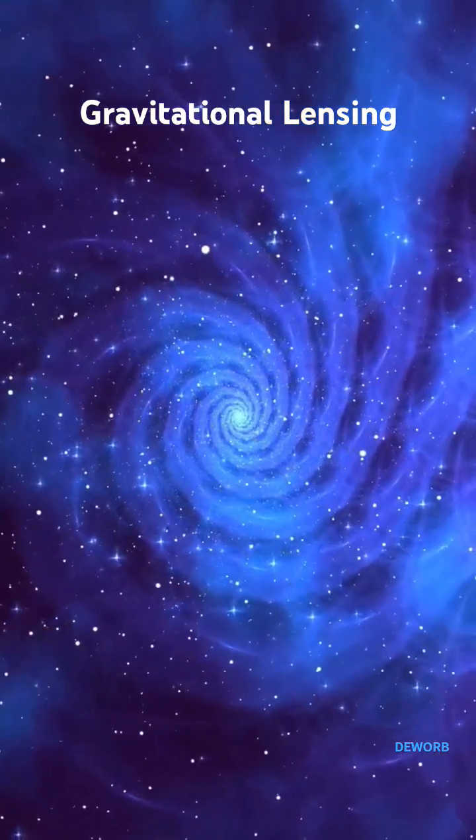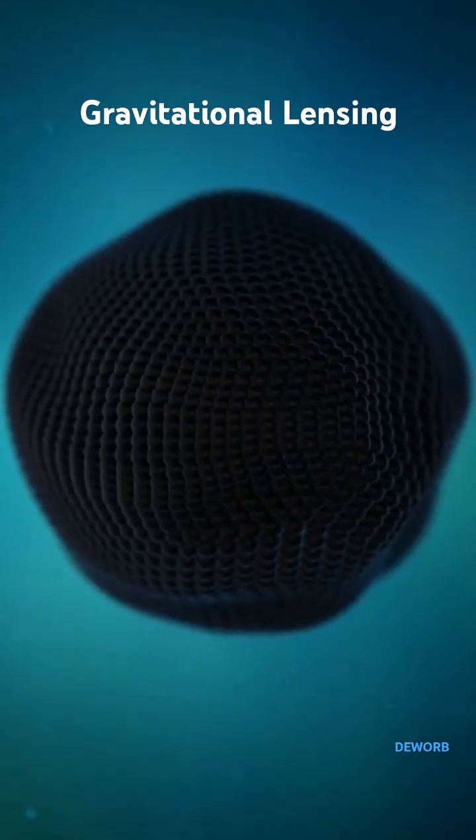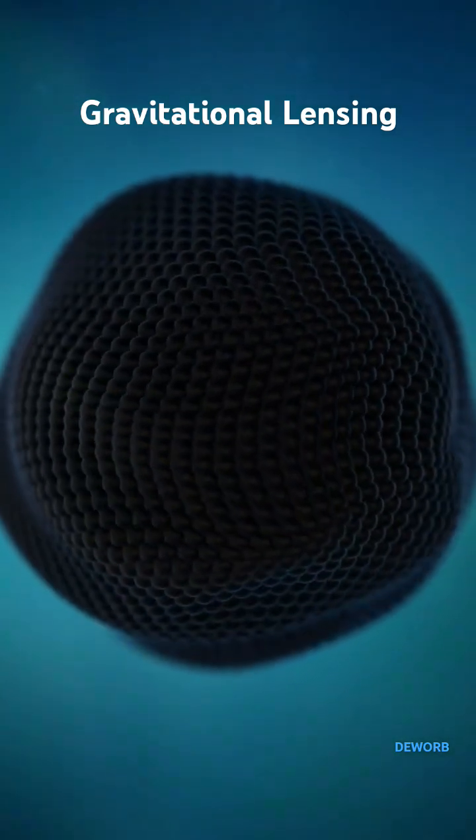Scientists even use it to map dark matter, the invisible substance shaping the cosmos, because it reveals itself through the way it bends light.